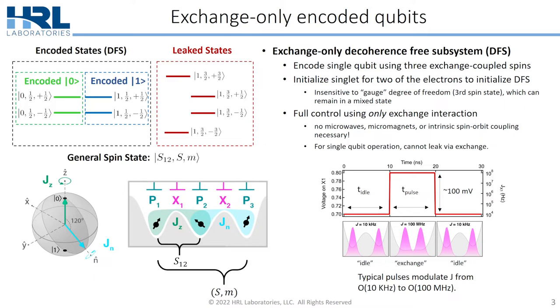Another nice property for these qubits is that for single qubit operation, exchange pulses cannot force us to leak the DFS subspace, which is a really nice property. Only magnetic noise can make us reach these leaked states.